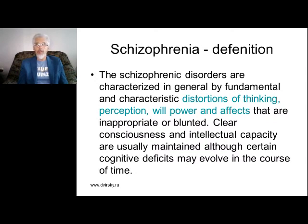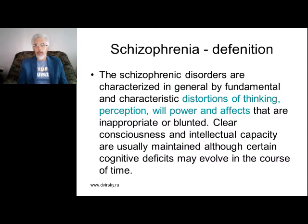Second term: delusions. Delusions are a pathology of thinking. Thinking is a mental process by which we reason, categorize, and compare mental representations. Thinking is the manipulation of perceptual images — a cognitive process. Cognition is our ability to create networks from different neuronal events. We integrate the current time, former time, and future — creating a network from all events.